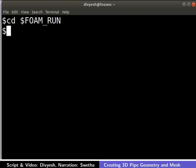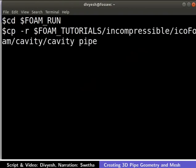Here onwards, please remember to press the Enter key after typing each command. Let us now copy the cavity case from the icoFoam tutorial directory to the run directory. Type the following command to do so. Note that the cavity case is copied to the pipe directory.